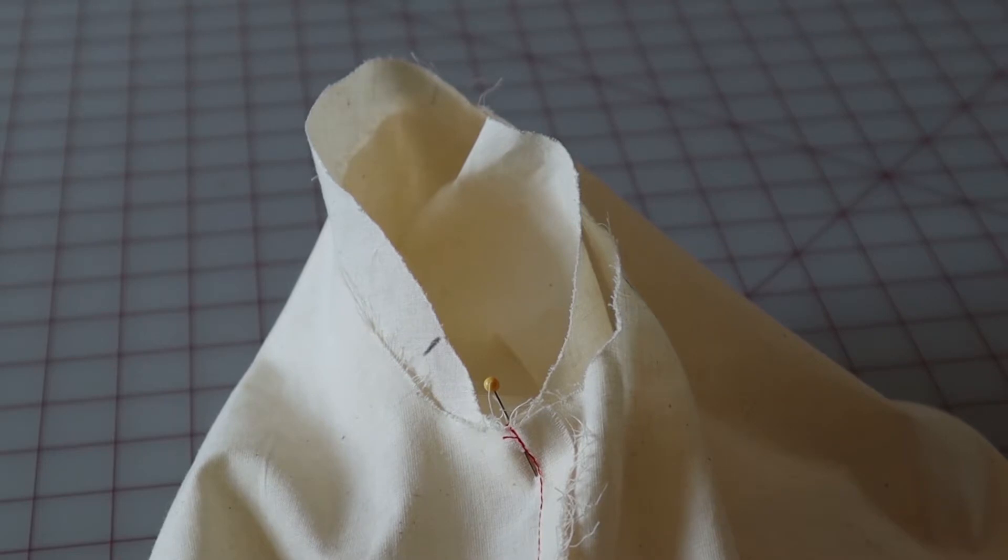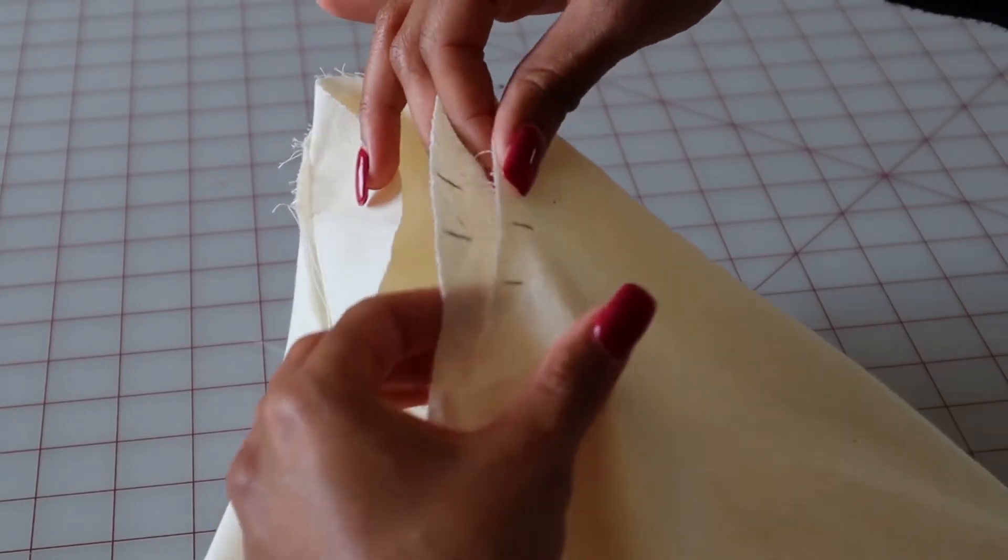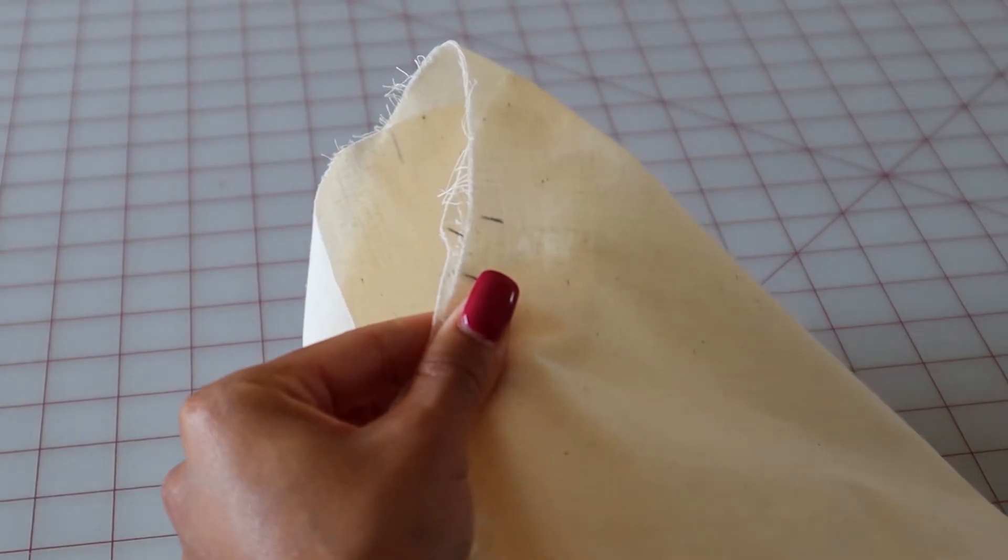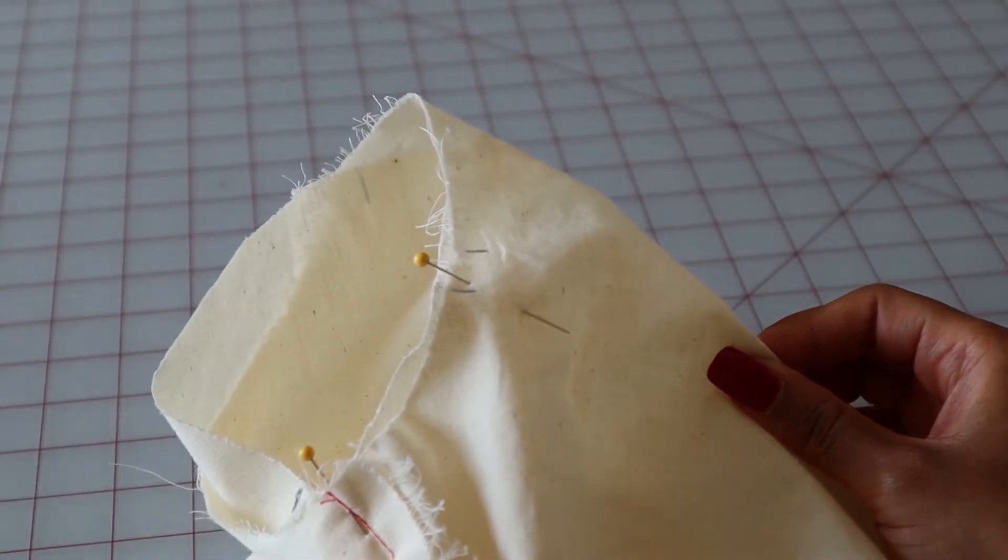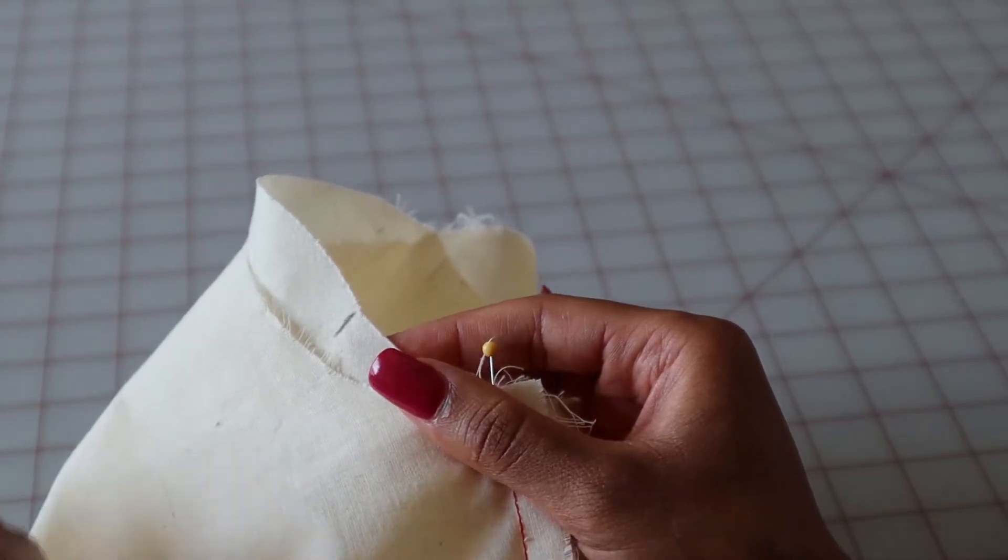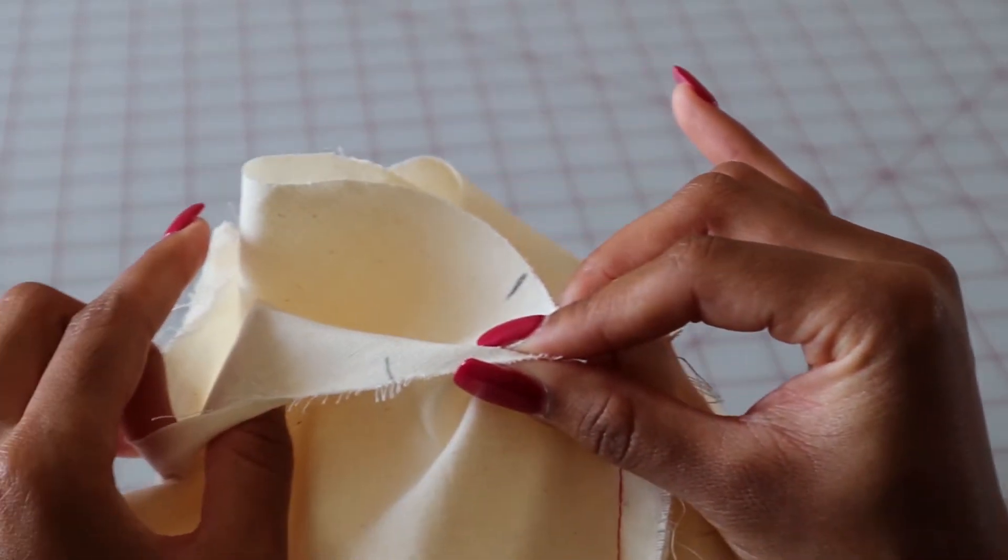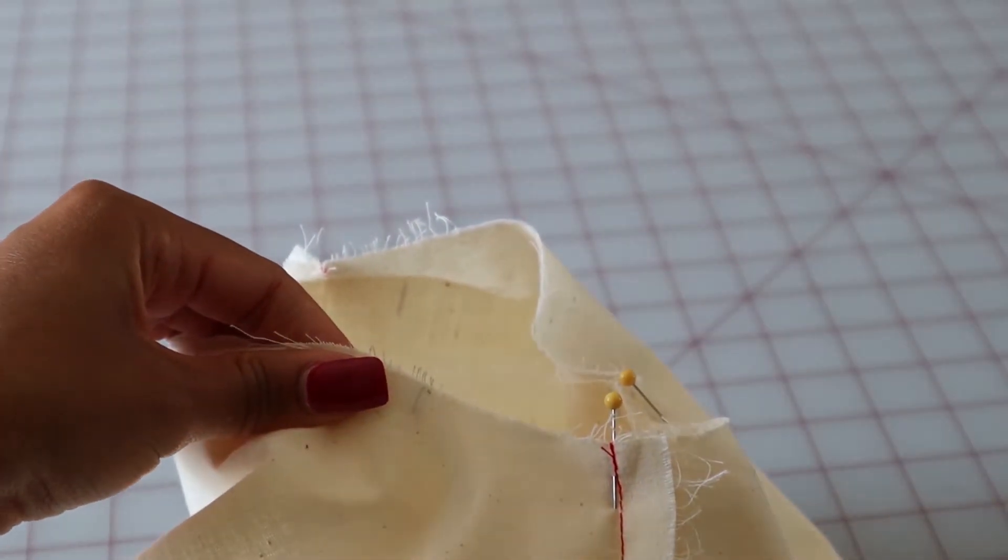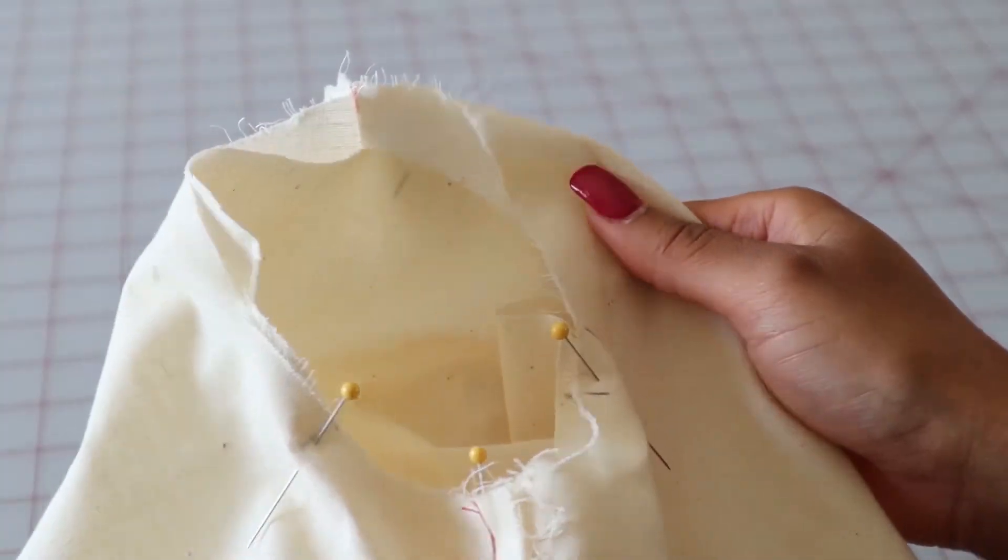So now we will match our notches. So you have two notches on the back of your sleeve; you'll match it with the two notches on your back bodice and you will pin those two in place. Now for the front, you have one notch on your sleeve and one notch on your bodice, and you will pin this into place as well. So when you're done it'll look like this.